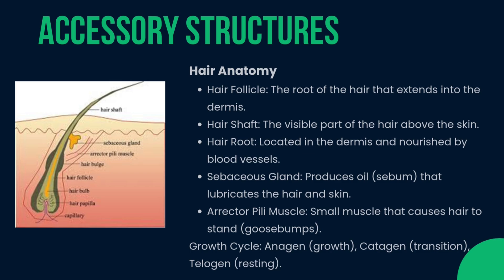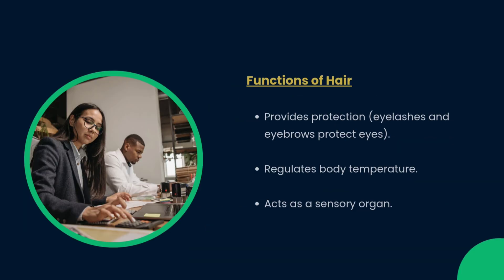Hair consists of the hair follicle, which is the root of the hair that extends into the dermis; the hair shaft, which is the visible part above the skin; and the hair root, located in the dermis. The sebaceous gland produces oil called sebum, and the arrector pili are small muscles that cause hair to stand up, producing goosebumps. The functions of hair include providing protection for the eyes via eyelashes and eyebrows, regulating body temperature, and acting as a sensory organ.